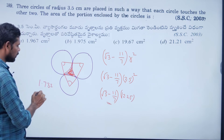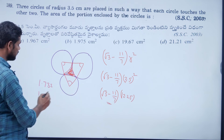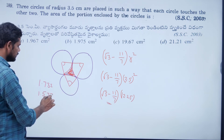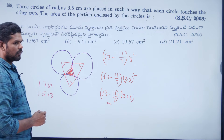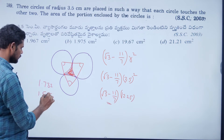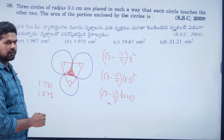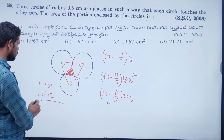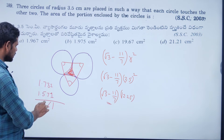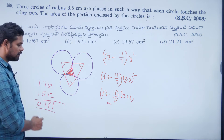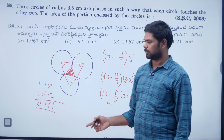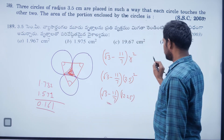11/7 value is approximately 1.571. So approximately (1.732 − 1.571) = 0.161. Therefore 0.161 × r² = 0.161 × 12.25 ≈ 1.97225.